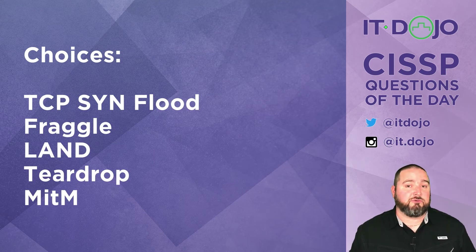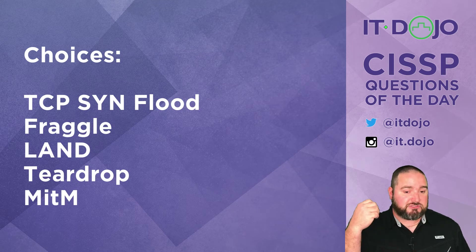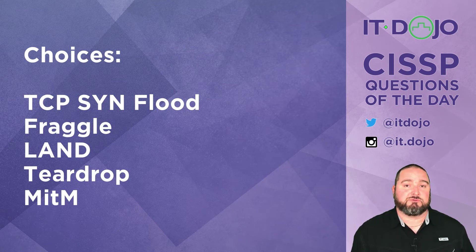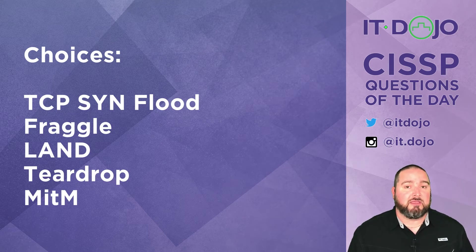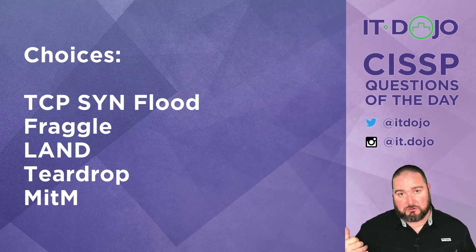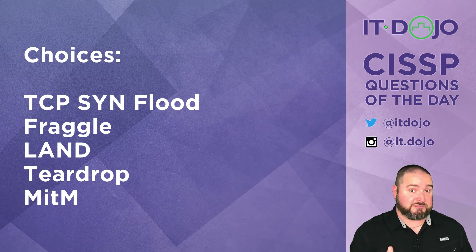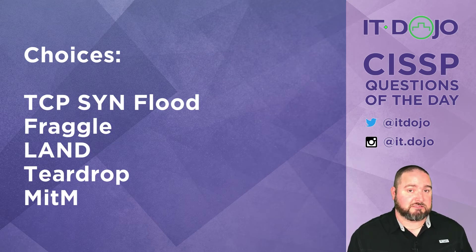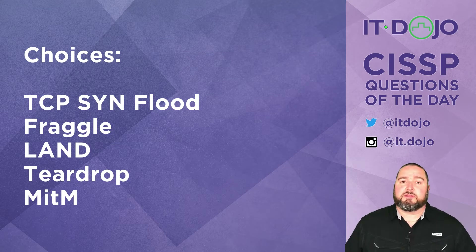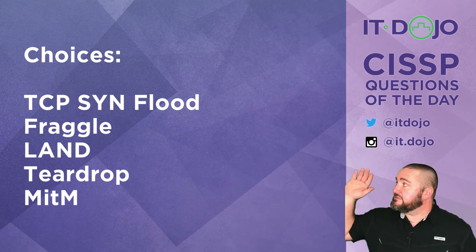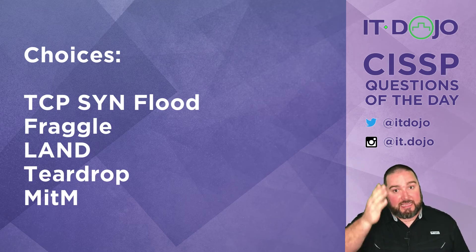Next: is it a Fraggle? A Fraggle is a UDP-based amplification attack designed to let you send packets to a broadcast address and have all hosts respond back to a target node in order to overwhelm and flood it with traffic. That is not what is occurring here. This is not a Fraggle — nor is it a Smurf, even though Smurf isn't a listed answer choice. Smurfs and Fraggles are very similar kinds of attacks, but this is neither.